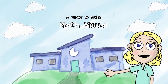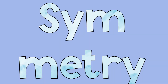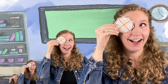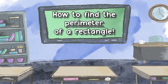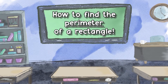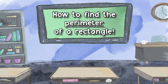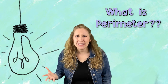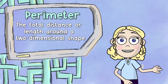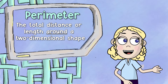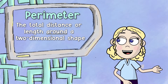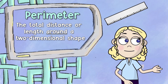Doodles and digits — area, symmetry, fractions too, it's all here for you. So what is perimeter? Perimeter is the total distance or length around a two-dimensional shape.